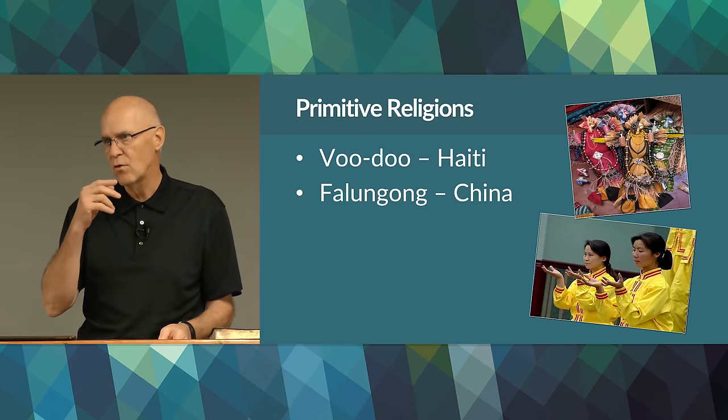Not counting primitive religions, there are only about eleven organized religions in the world, usually listed geographically based on where they began. If you take a course in comparative religion at college, that's typically how they're categorized — geographically. We begin with what are called the Far Eastern religions, the first of which is Taoism.